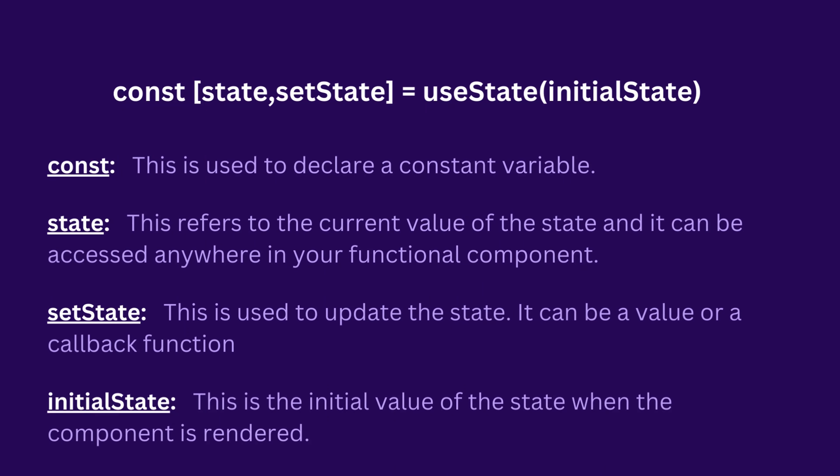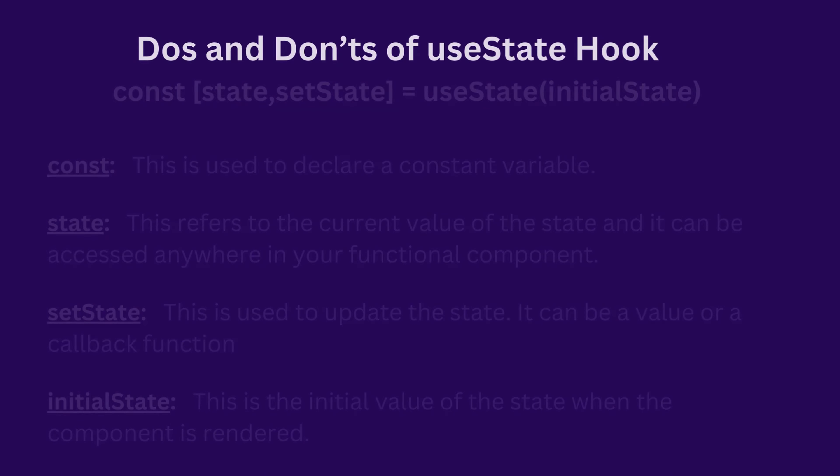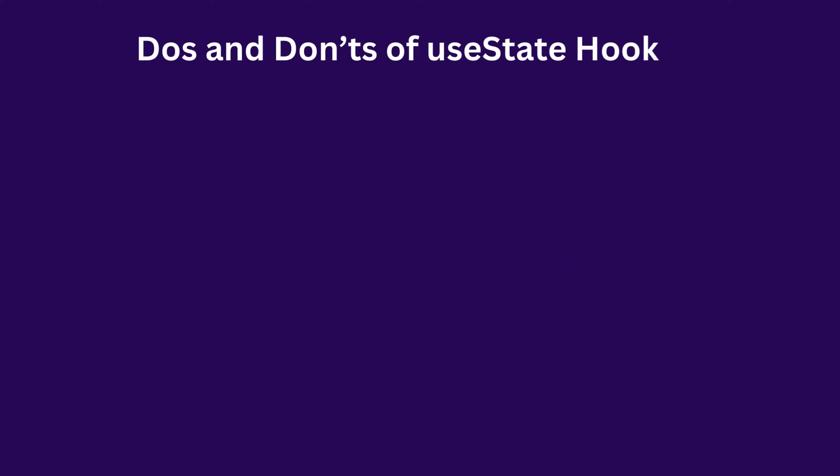The next thing is the initial state. The initial state is the initial value of the state when the component is rendered. Now that we know how to declare a state using the useState hook, let's check some do's and don'ts of the useState hook.